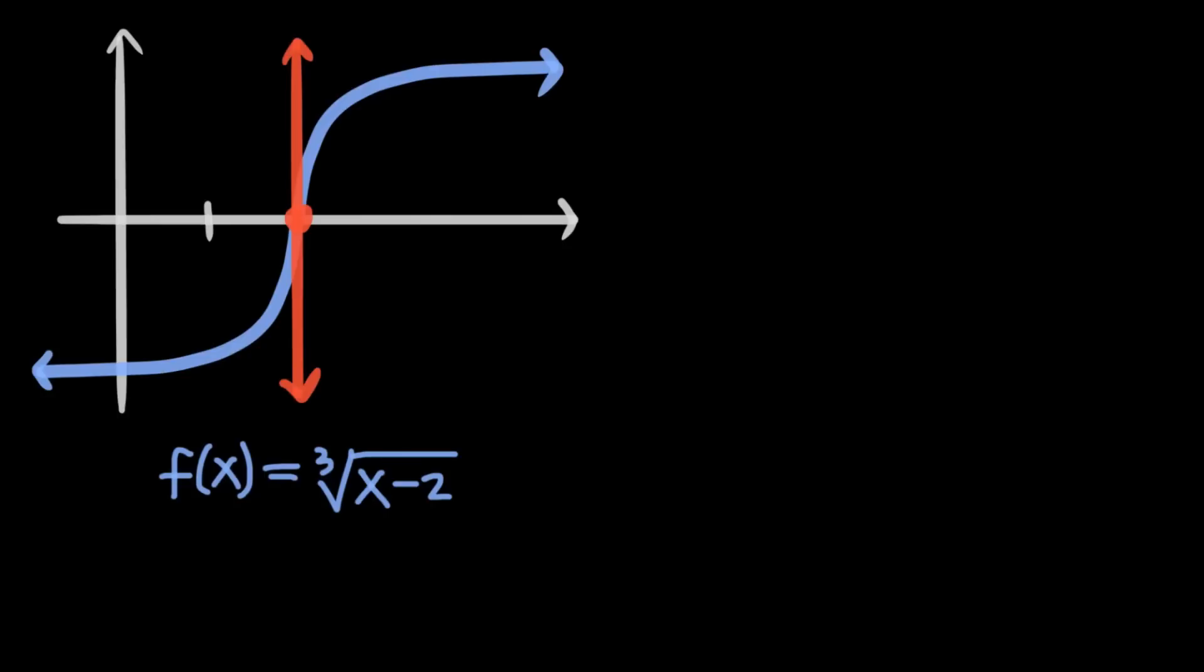An infinitely steep slope means that the derivative along this line is undefined. So to find out exactly what this line is, we need to see where the derivative of f is undefined.